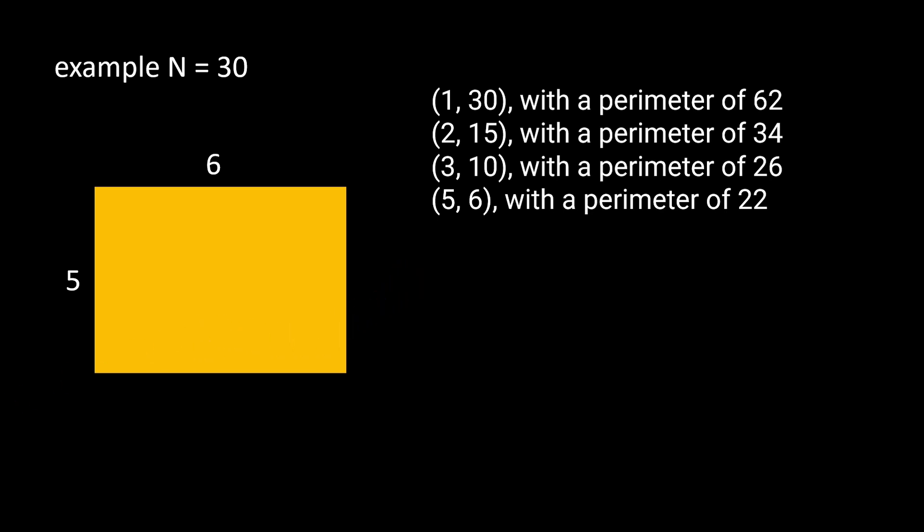As always on Codility we are looking for efficiency, so instead of iterating over all the possible values of dimensions, we are going to limit our search up to square root of the area N, just as we have done for the count factors example in the previous video.